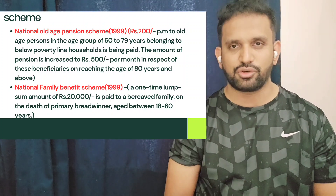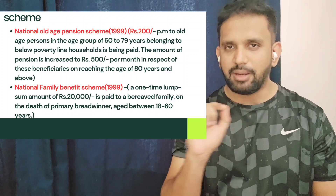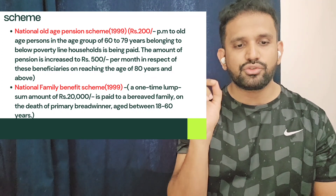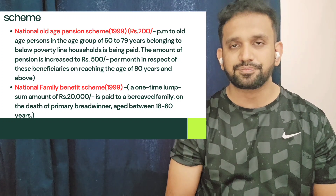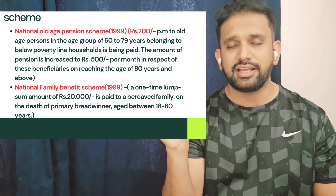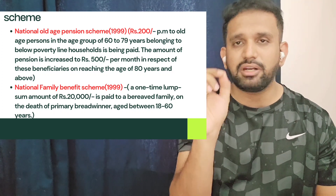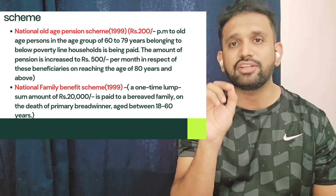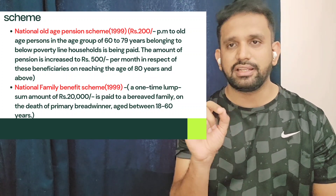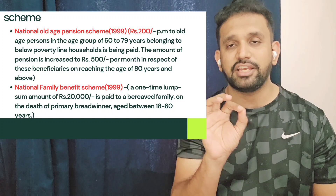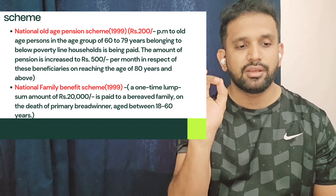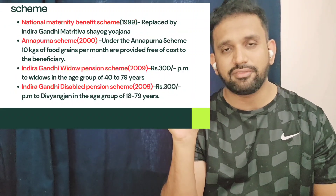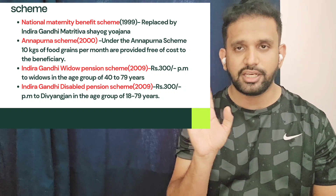National Family Benefit Scheme is now covered. Next, for the Indira Gandhi National Widow Pension Scheme, widows should be in the age group of 40 to 79 years, and the government will give them 300 rupees per month. For the Indira Gandhi National Disabled Pension Scheme, the person should be in the age group of 18 to 79 years, and the government will give them 300 rupees per month. So both widows and disabled persons (Divyang) receive 300 rupees per month.